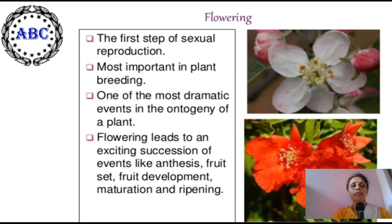Flowering is the first step of sexual reproduction and is most important in plant breeding — one of the most dramatic events in the ontogeny of a plant. Flowering leads to an exciting succession of events like anthesis, fruit set, fruit development, maturation, and ripening.